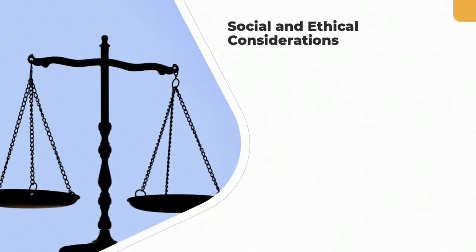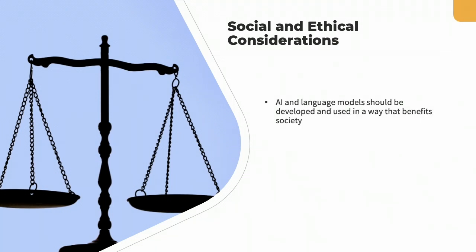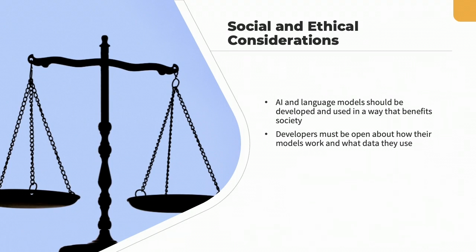While hacking and jailbreaking are often thought of as purely technical issues, they have far-reaching social and ethical implications that cannot be ignored. To ensure that AI and language models are developed and used in a way that benefits society, it is crucial to prioritize transparency and trustworthiness. This means that developers must be open about how their models work and what data they use, and users must be able to trust that these models are not biased or discriminatory.